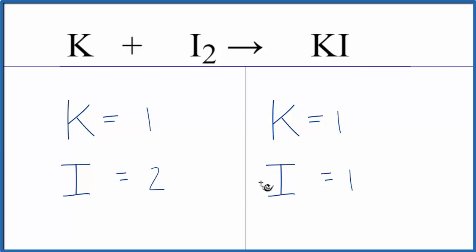So we've counted everything up, now we can balance the equation. It looks like we have 2 iodines here and only 1 here. So we can change the numbers in front of these compounds and elements here, but we can't change the small numbers, the subscripts. So we're going to change the coefficient here in front of KI.